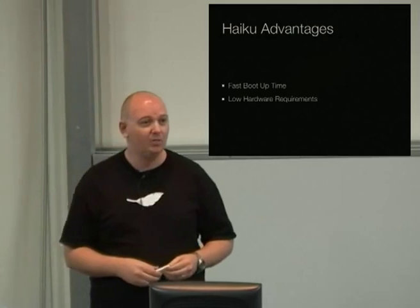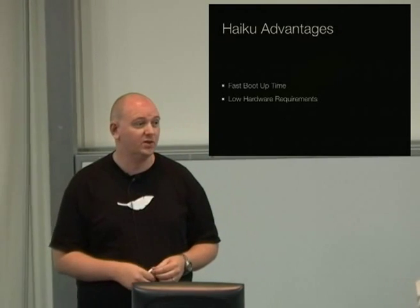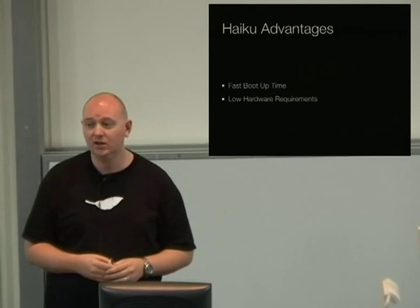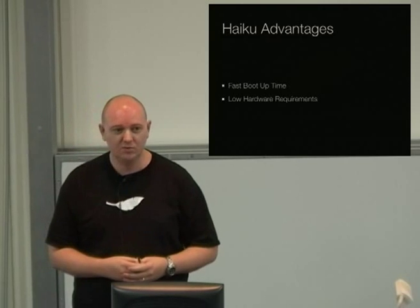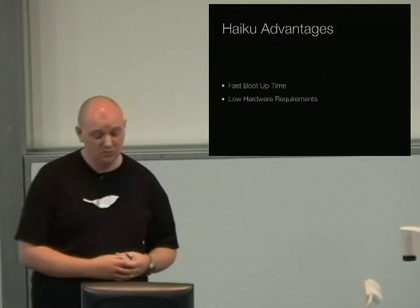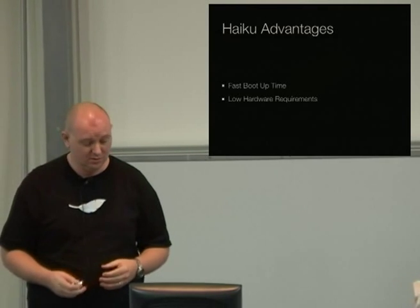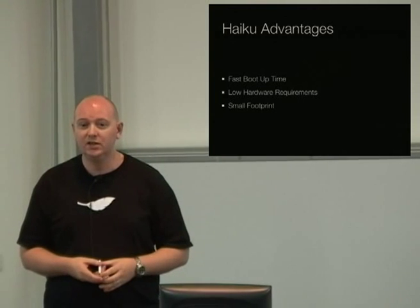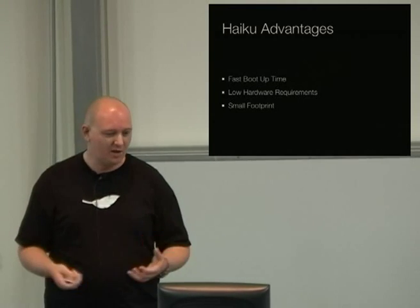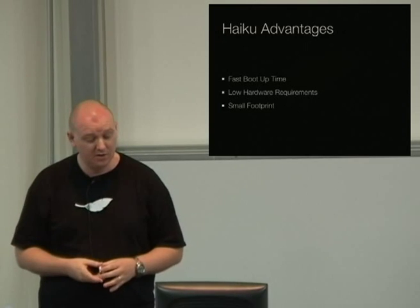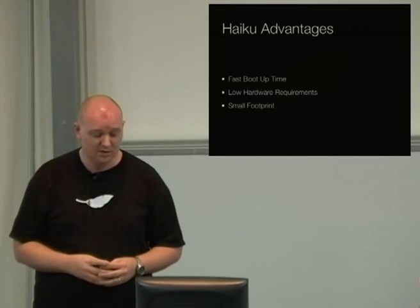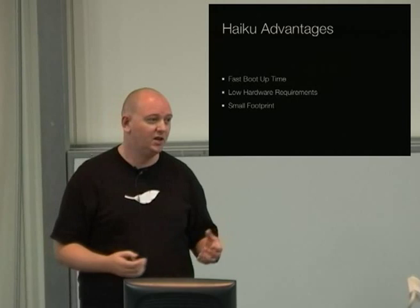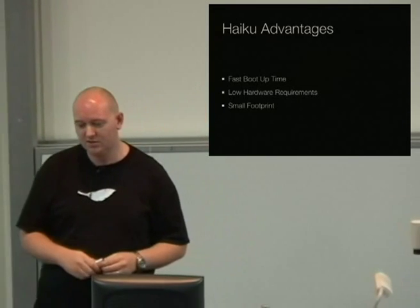Haiku has low hardware requirements, meaning you can run the system with 512 megabytes of RAM and it would run happily. Compare that with Windows 7, which needs at least 4 gig to run well, and OS X, maybe 2. It has a very small footprint — a full install, even with applications, will be around 1 to 2 gigabytes, with the operating system being around 500 megabytes. Compare that with Windows 7, which needs about 10 gig, and OS X, which is around 6 to 8 gig.